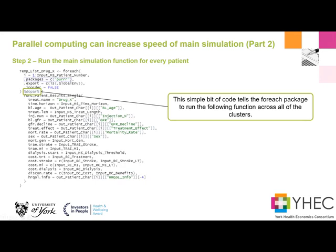Changing this line here from dopar to do is a good sort of bug check if you're trying to get up and running in parallel computing. Because if you leave it as do, then it's just a standard for loop. It won't be trying to run on any parallel computing, so you can make sure your function works for an individual core before trying to pass it on to parallel.